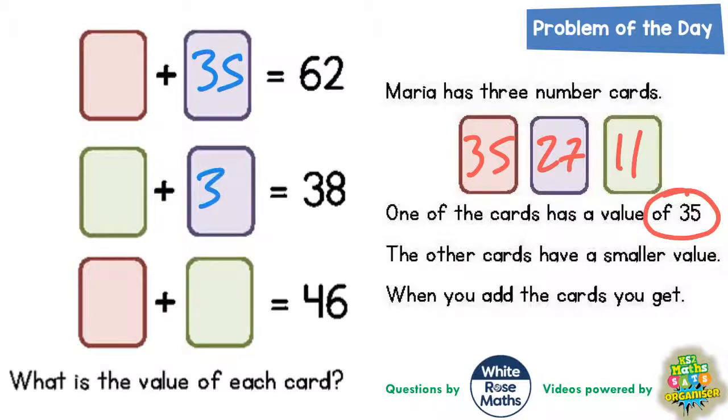If the purple one was 35, then we'd end up with red plus purple equals 62. Red plus 35 equals 62. Well if you take 35 off 62, that will tell you what the red one was worth.